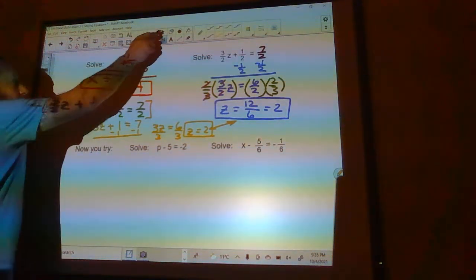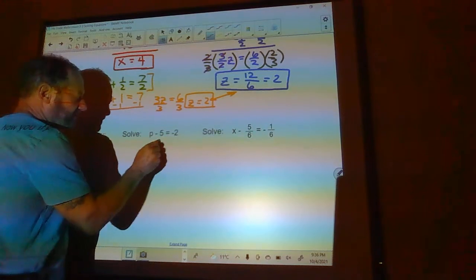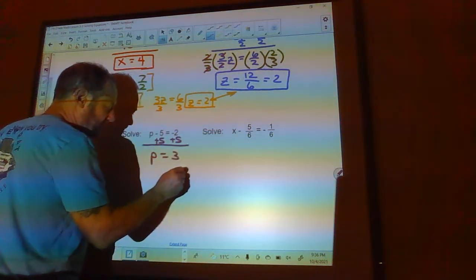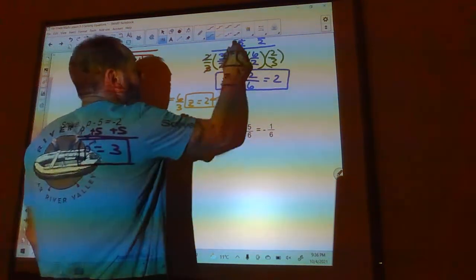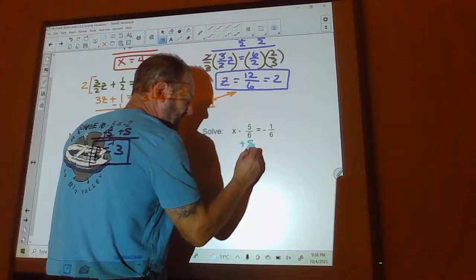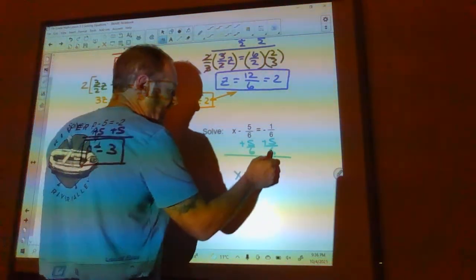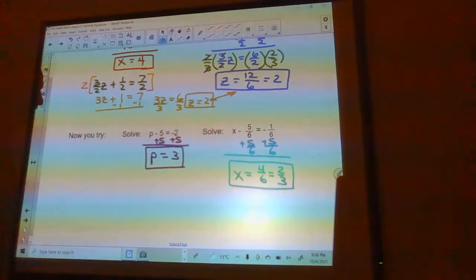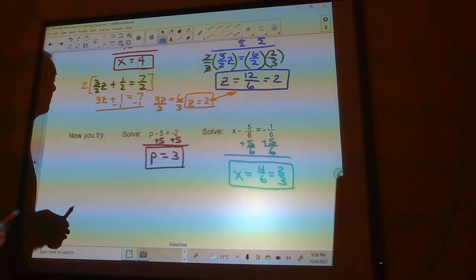Here's what I want you to do. I want you to take a second, pause the video, do these two problems right here, and then jump back on here and see how you did. So what we're going to do is we're going to take 5, we're going to add it to both sides of this equation here because that's going to cancel out that minus 5, and I'm going to get p equals 3. That one is super easy. This one here, I'm going to add 5 sixths to both sides. It would probably be the easiest way to do this. It cancels this out, leaves me with x over here, which is what I wanted. And 5 sixths minus 1 sixths would be 4 sixths, which reduces to 2 thirds. Always make sure to reduce your fractions. Also, leave them as improper fractions. Please don't change them to mixed numbers unless it tells you to do that.